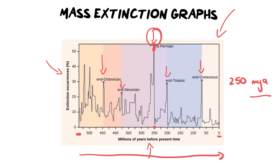Another thing teachers might ask is how many species went extinct in, for example, the Ordovician period. You take your ruler and read across to the percentage — that one is 30%. Other questions would require things you need to have learned, like what was the cause of the Cretaceous mass extinction or the Permian extinction. These are things you would have to just know — you can't find the cause on a graph. This is just one kind of graph; there are many different kinds they could give you.